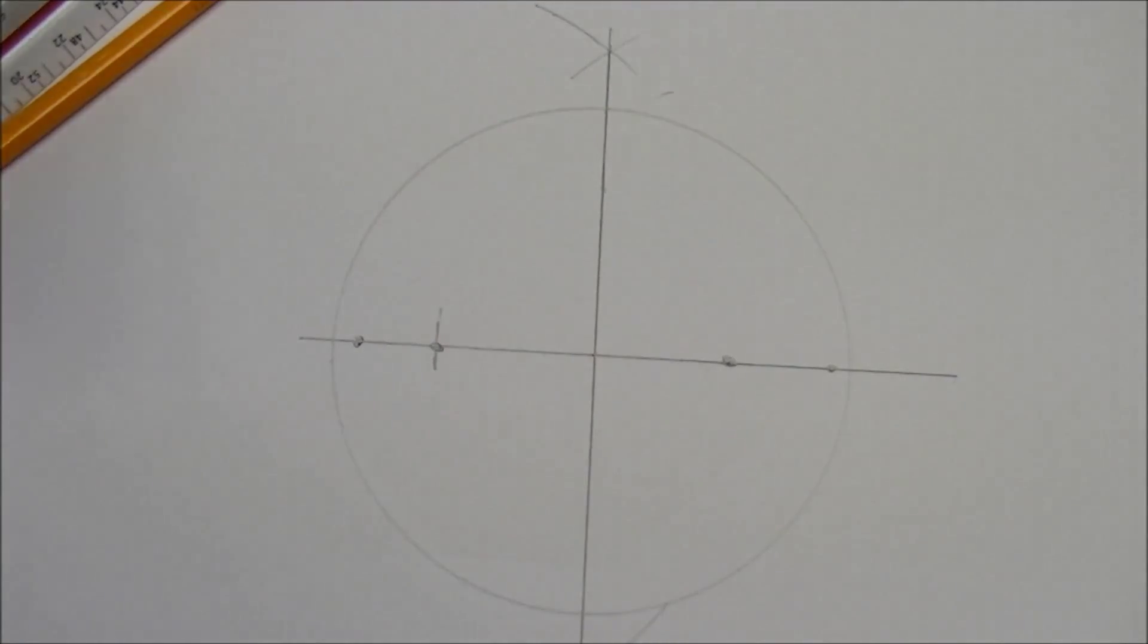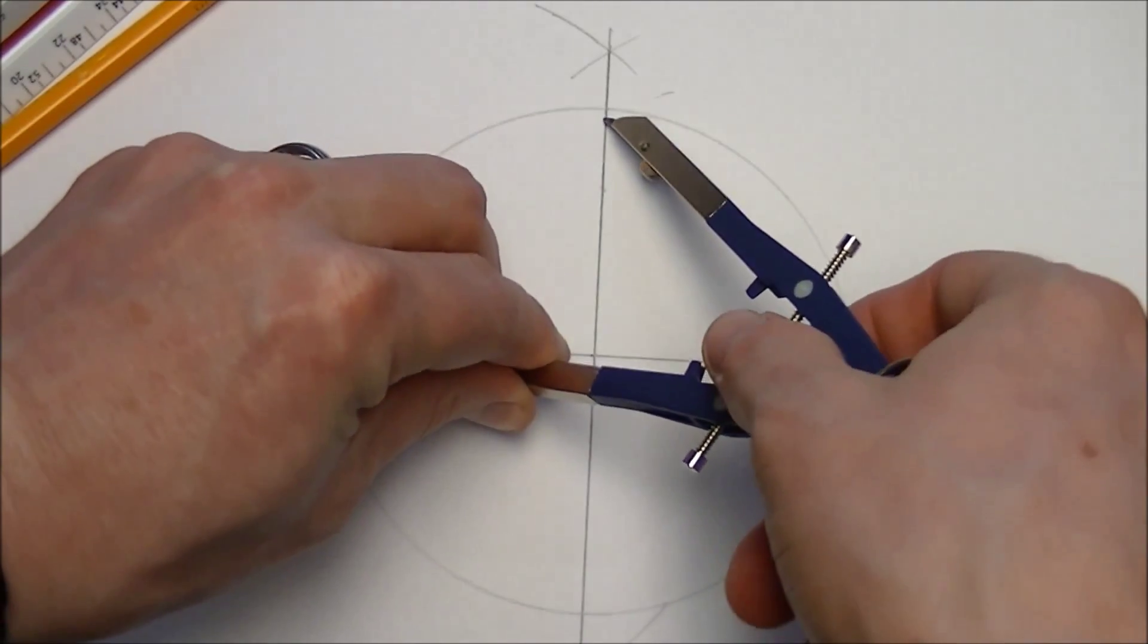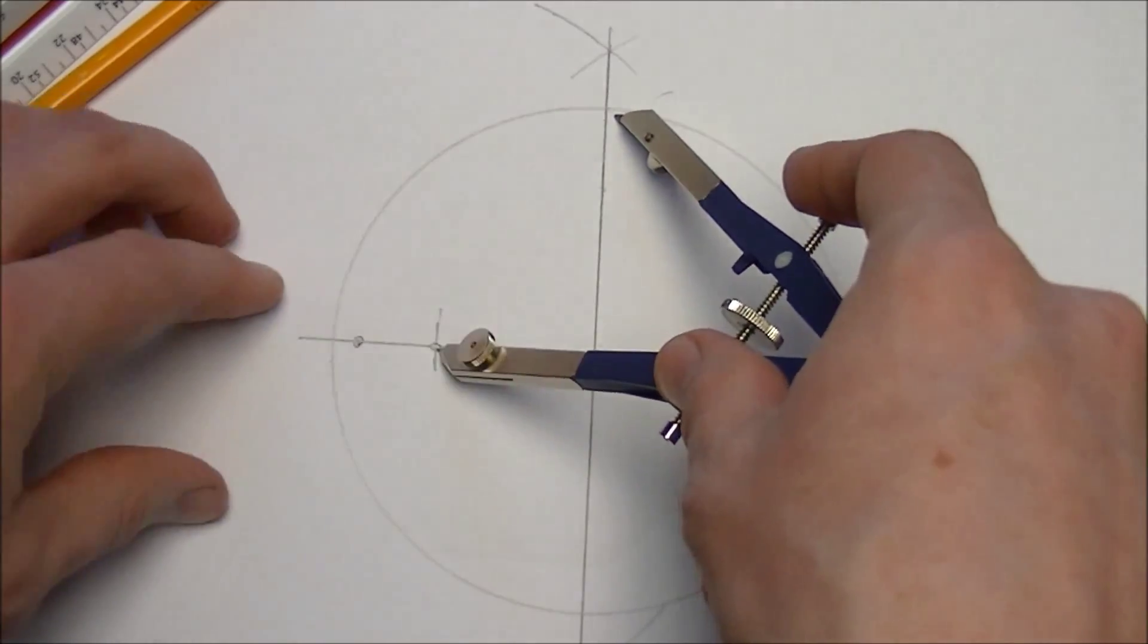And then from that point, we measure the distance from there to the edge of the circle, there.